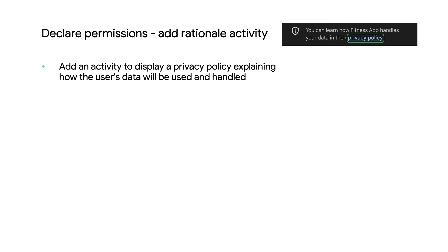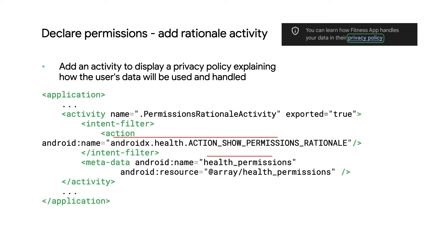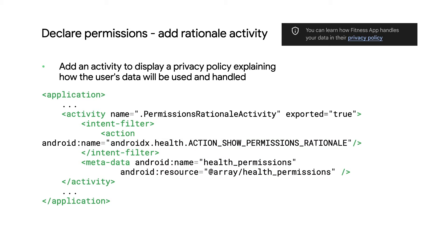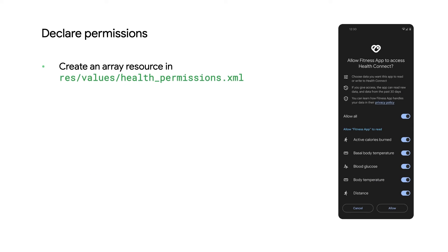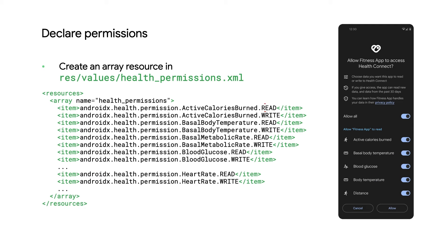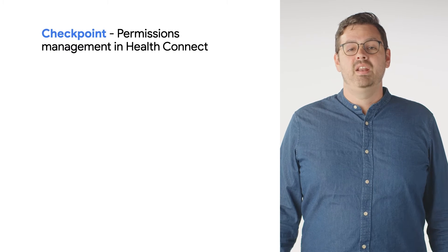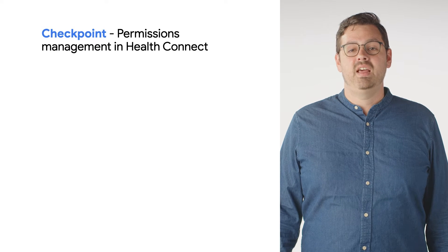We'll want to provide an activity that can explain to users how their data will be used and handled. All apps integrating with HealthConnect will need to comply with our privacy and security policies and are subject to review. Next, we create a health permissions resource file and include all of the permissions that your app will need to use in that XML file. Your app should now show up in HealthConnect's connected apps list.